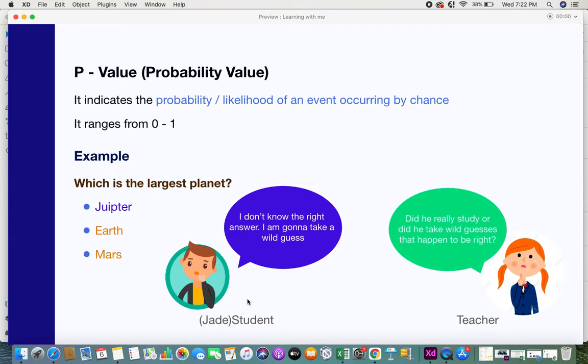Here in this example, Jade does not know the right answer and Jade is going to take a wild guess. Now this teacher on the other end wants to understand whether the students understand the subject and they have good knowledge. So now based on the results generated by all students, the teacher is having this guess whether the students actually have the knowledge and gave the right answer or they are just taking a wild guess.